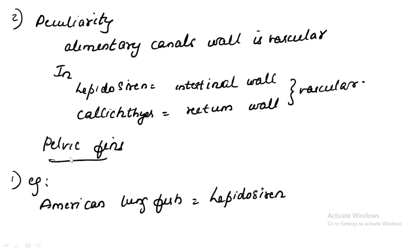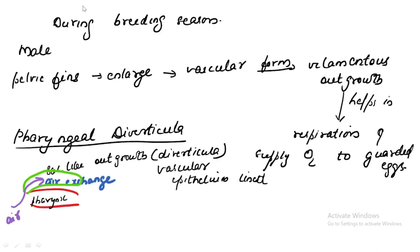Another structure modified to assist respiration is the pelvic fin. This modification is found in the American lungfish Lepidosiren. During the breeding season in males, the pelvic fin gets enlarged and becomes vascular, helping in respiration. This modified pelvic fin also supplies oxygen to its eggs.